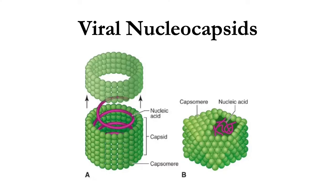These are examples of viral nucleocapsids. In letter A, you'll see a nucleocapsid of a helical virus because it looks spiral. In letter B, you'll see a nucleocapsid of an icosahedral virus because, as its name implies, it looks like a polyhedron with 20 faces. Viral nucleocapsids are named based on their structural appearance, and they serve as a protein shell of the virus to protect the genome from harsh environments.